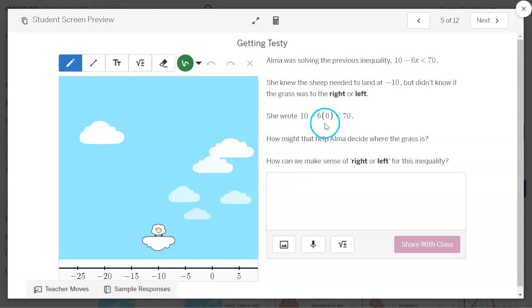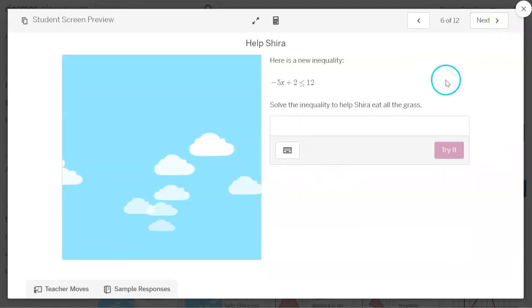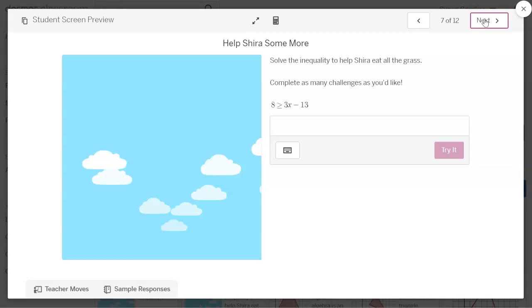How could that help Alma decide where the grass is? And then I added this, how could we still make sense of left and right looking at this? And I've got some teacher moves down here to help you with that. I'm going to let you read those teacher moves, I don't want to talk too much about that. And then you're helping Shira solve another inequality.